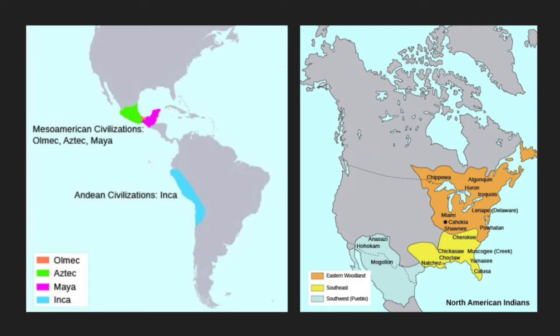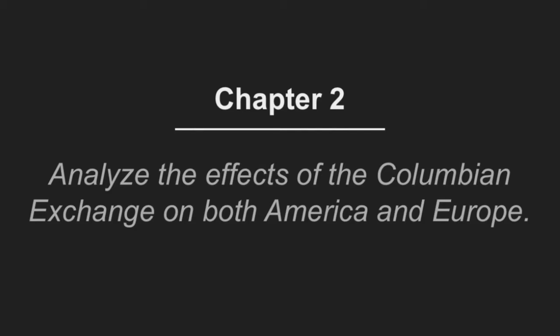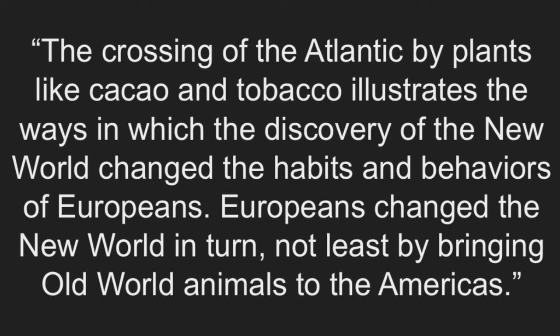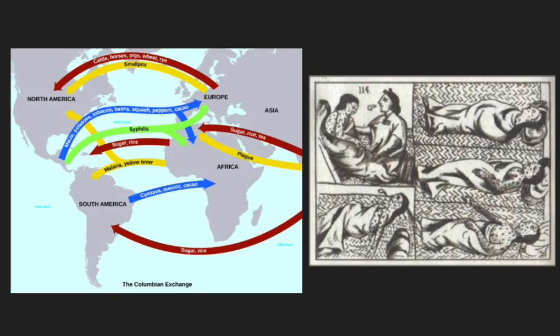Question 2: Analyze the effects of the Columbian Exchange on both America and Europe. The Columbian Exchange was a system of exchanges between America, Europe, and Africa, which revolutionized each country for better and for worse. According to U.S. History by OpenStax, the crossing of the Atlantic by plants like cacao and tobacco illustrates the ways in which the discovery of the New World changed the habits and behaviors of Europeans. Europeans changed the New World in turn, not least by bringing Old World animals to the Americas. The introduction of horses to northern native populations was especially beneficial to them and enhanced their hunting practices.